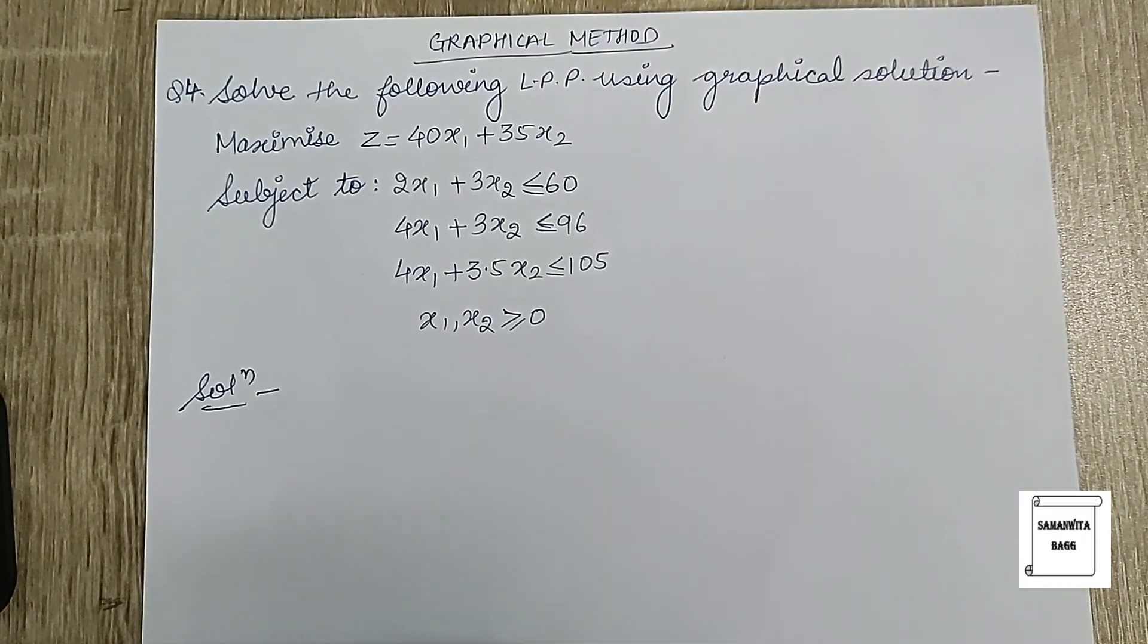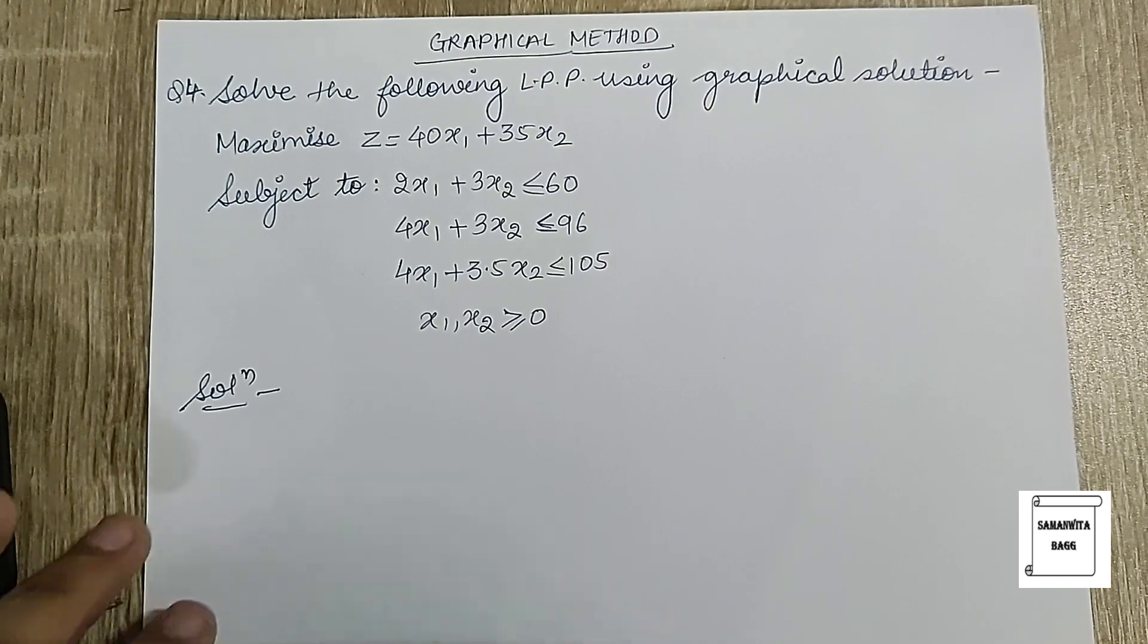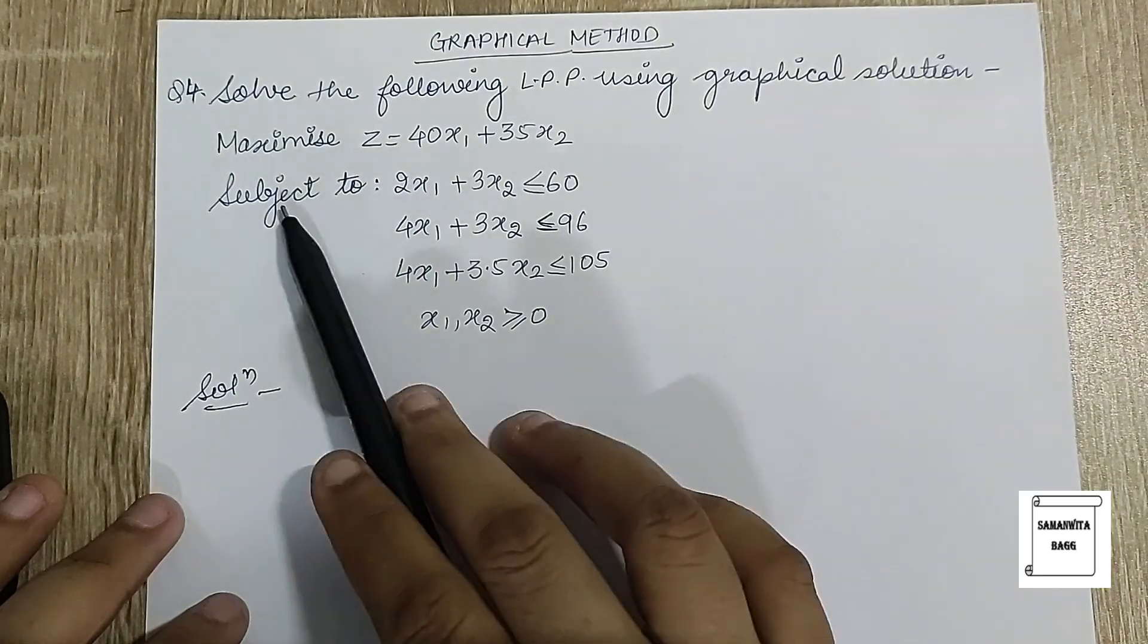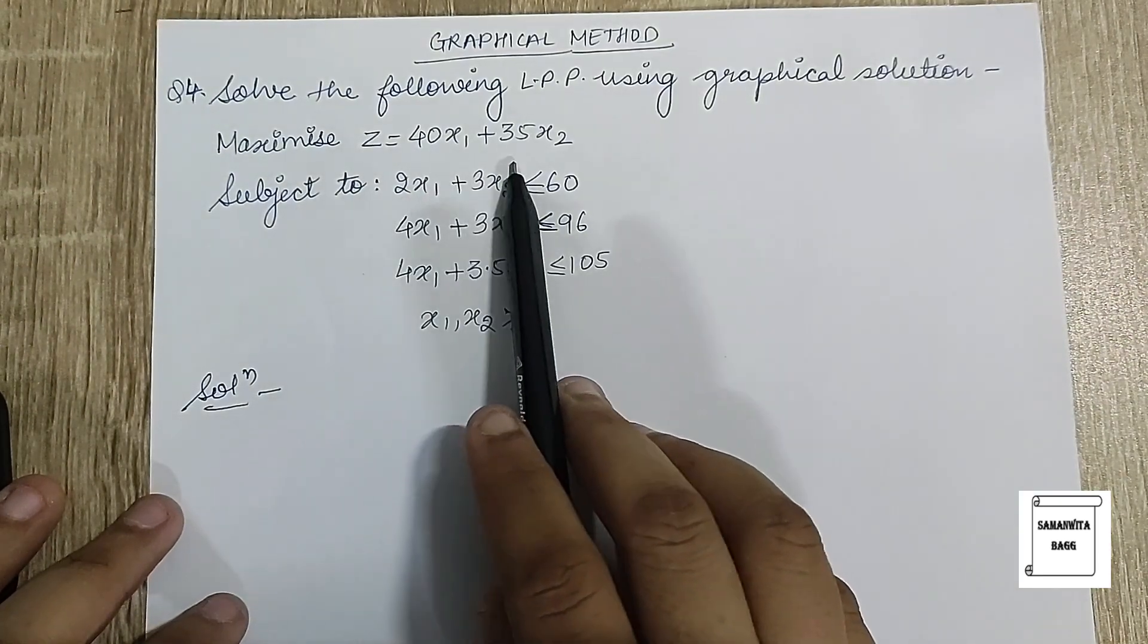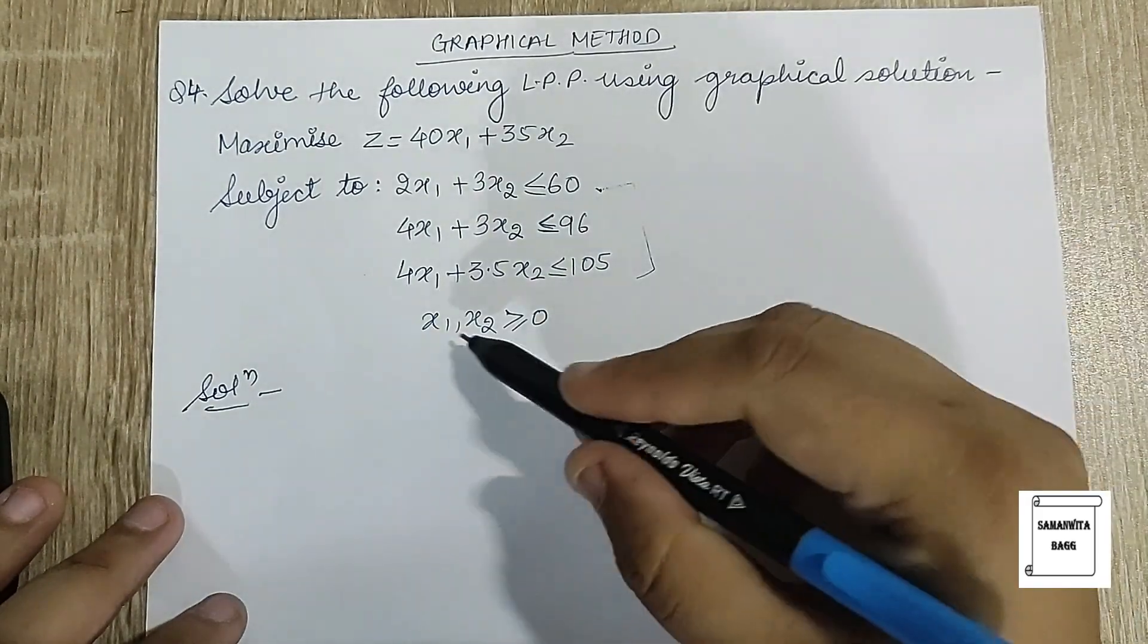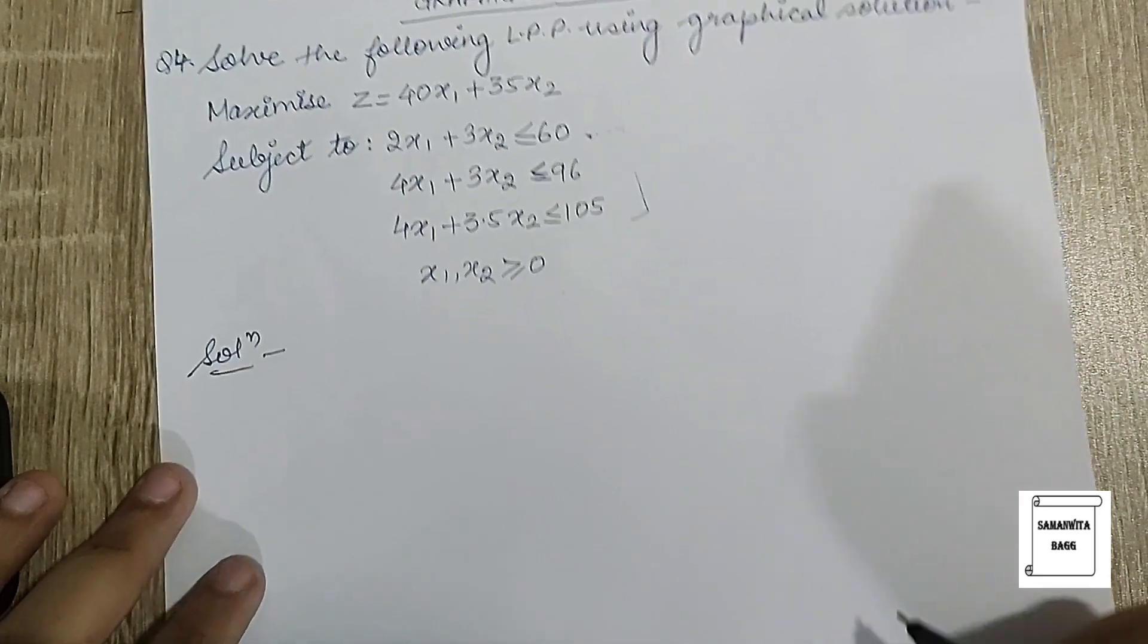Hello everyone, welcome to the next session on operations research. In this session we are going to solve one last problem on graphical method. Solve the following LPP using graphical solution. We have to maximize Z = 40x₁ + 35x₂. These are the three constraints given and this is the non-negativity constraint.